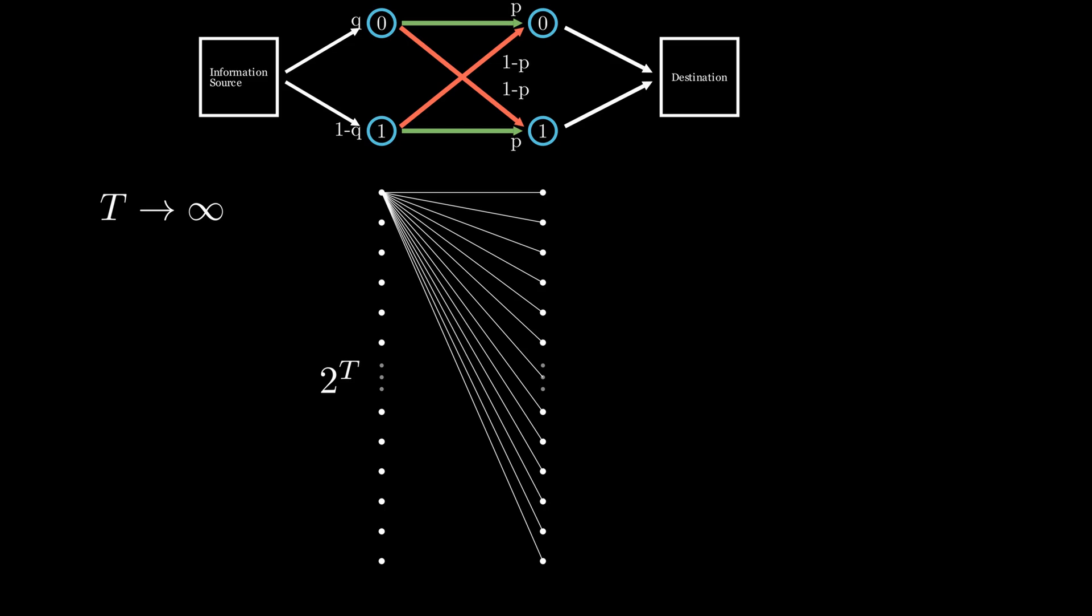Our rate is essentially the amount of bits that we can send reliably through our channel each cycle. To calculate it, we need to take the amount of messages that we can send, and divide them by the amount of messages that can be uniquely encoded.